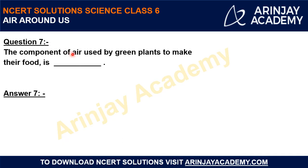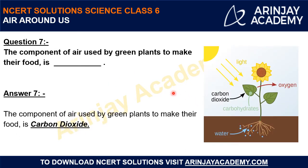Question 7: The component of air used by green plants to make their food is? The process through which plants make their food is called photosynthesis. The plant leaves take water from the stem, light from the sun, and use carbon dioxide present in the atmosphere. They use carbon dioxide and produce oxygen and glucose. So carbon dioxide is the atmospheric gas which plant leaves require for photosynthesis. The component of air used by green plants to make their food is carbon dioxide.